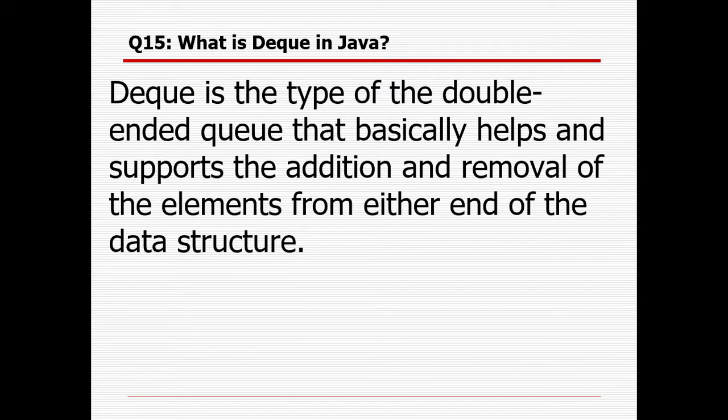What is Deque in Java? Deque is a type of double-ended queue that supports addition and removal of elements from either end of the data structure. It is a doubly-ended queue where insertion and deletion can be performed from both sides.